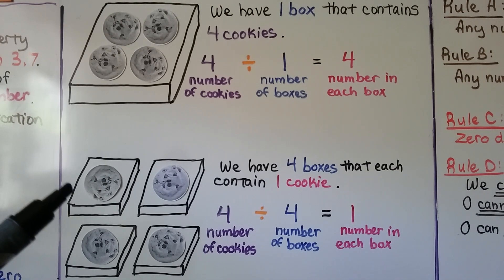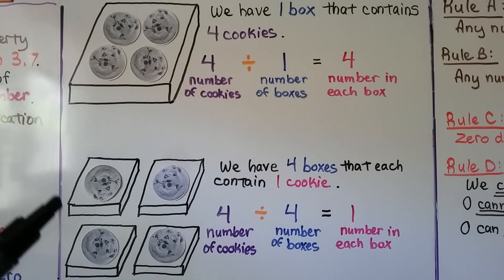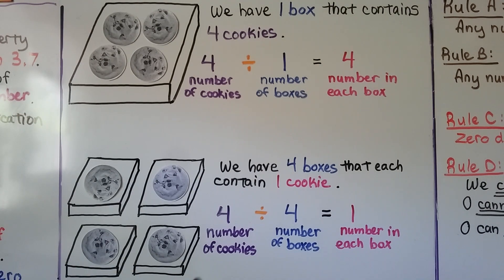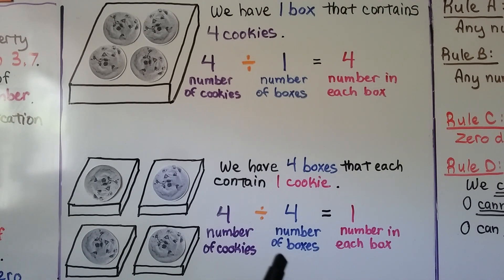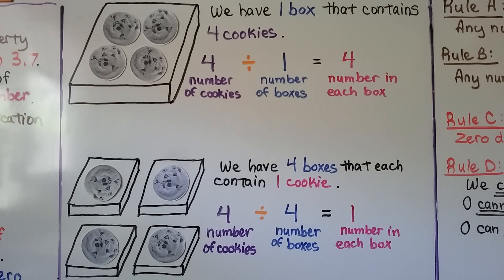Now here we have 4 boxes that each contain 1 cookie. We have 4 cookies, we divide it into 4 boxes, and there's going to be 1 cookie in each box.